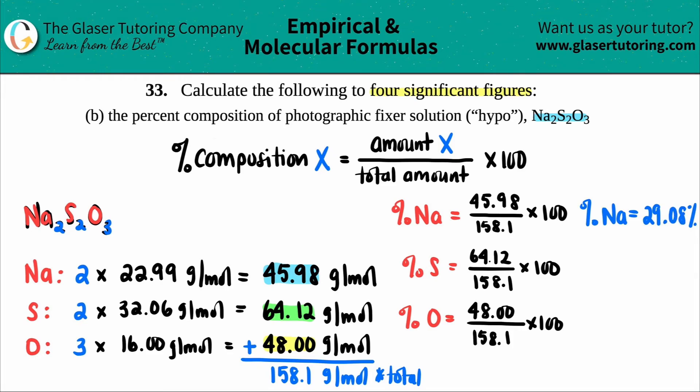Okay. So now let's do sulfurs. 64.12 divided by 158.1 times by 100. Four sig figs, I get 40. The percent of sulfur would be 40.56%. And then the percent of oxygen is 48 divided by 158.1 times 100. Four sig figs, 30.36. So the percent of oxygen is 30.36.